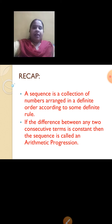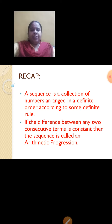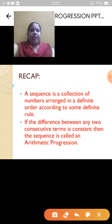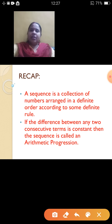Then I defined Arithmetic Progression: if the difference between any two consecutive terms is constant, then the sequence is called an Arithmetic Progression. The main thing to understand is that in AP, the difference between any two consecutive terms is constant.